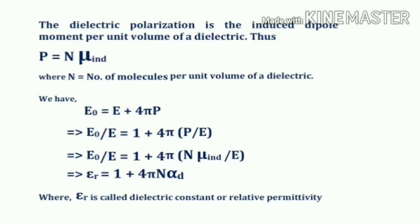From E₀ = E + 4πP, we get E₀/E = 1 + 4πP/E, which gives epsilon_r = 1 + 4πN × mu_induced / E = 1 + 4πN × alpha_d, where epsilon_r is the ratio of the electric field strength in vacuum to that in the dielectric, known as the relative permittivity, and alpha_d is the distortion polarizability. This is a very useful equation that we will frequently use in our calculations.